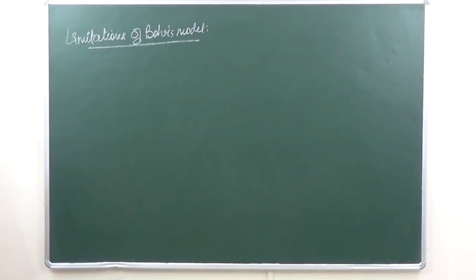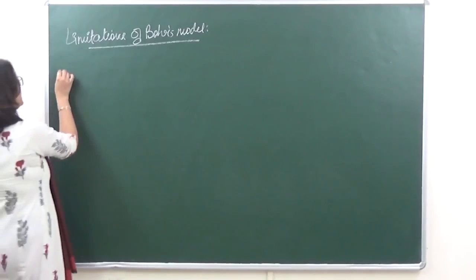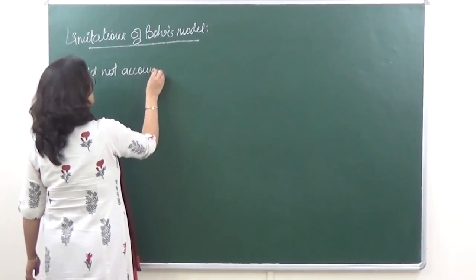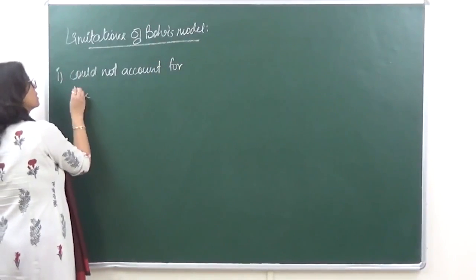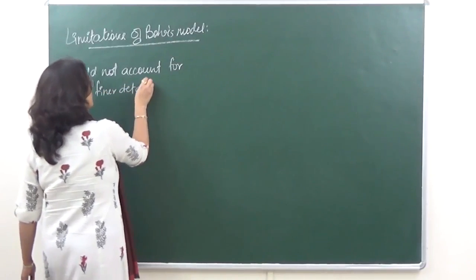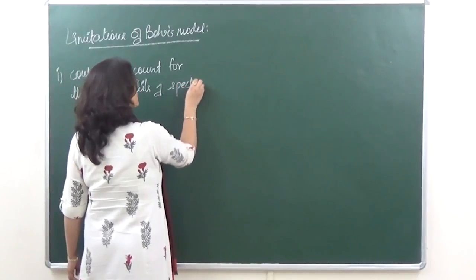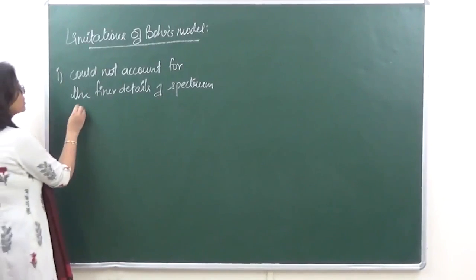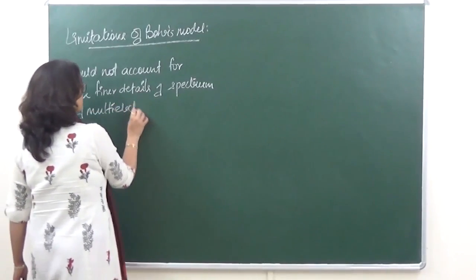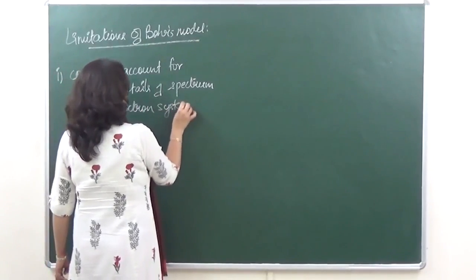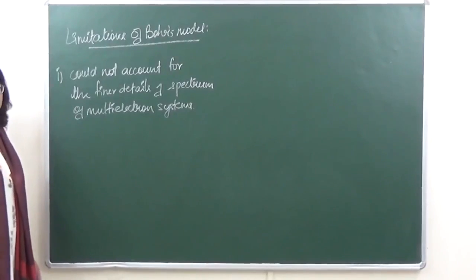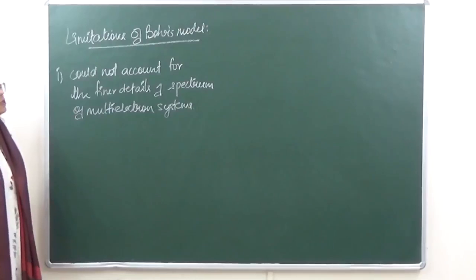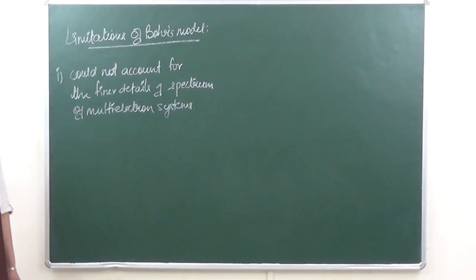Limitations of Bohr's model: First, it could not explain or account for the fine details of spectrum of multi-electron systems. What happened is it could only explain to us the spectrum of hydrogen, but when multi-electron systems were seen, Bohr's model could not explain their spectrum.